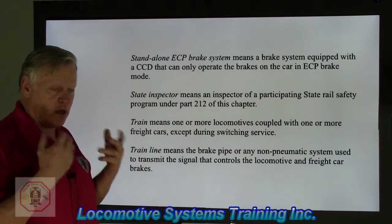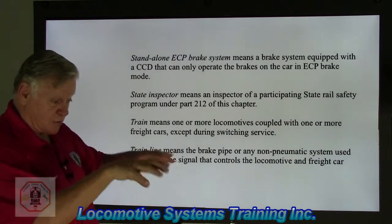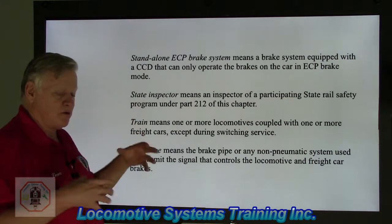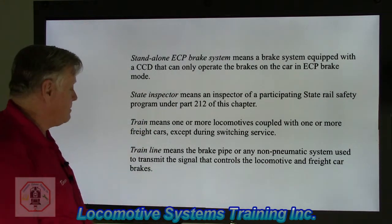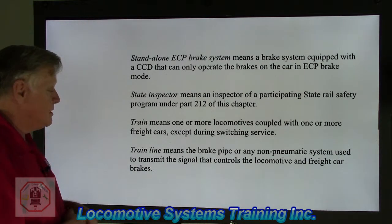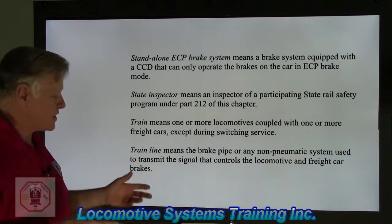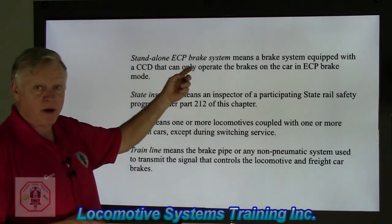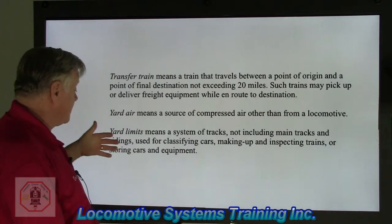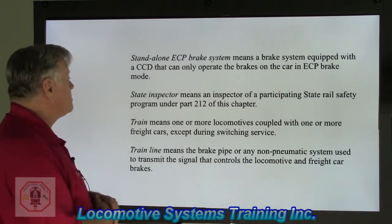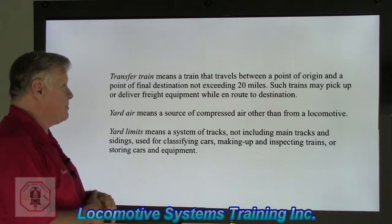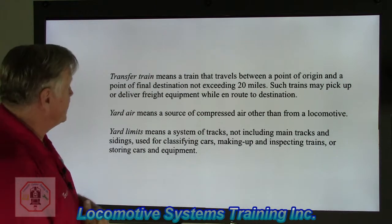Train means one or more locomotives coupled with one or more freight cars, except during switching service — that means you're taking this train, assembling it, and driving from point A to point B. Train line means the brake pipe or any non-pneumatic system used to transmit the signal that controls the locomotive and freight car brakes. There are two kinds of signals: one is pneumatic, which is in conventional air brakes; the other is electronic, which is ECP brakes. Most of the braking systems in the United States and Canada run on pneumatic braking systems. Transfer train means a train that travels between a point of origin and a point of final destination not exceeding 20 miles, and may pick up or deliver freight equipment while en route.